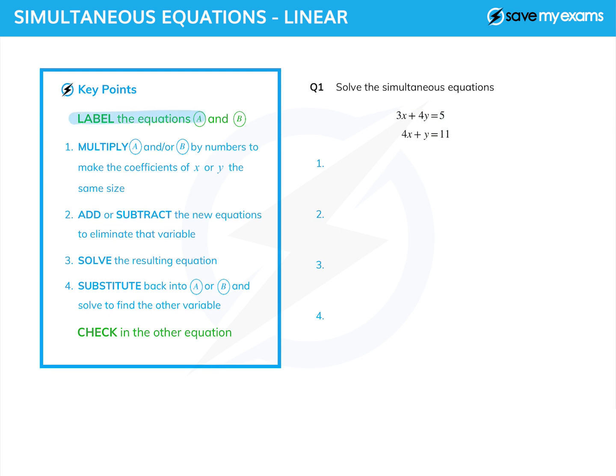Well, always a good idea in simultaneous equations to label your equations. A and B, I'm going to call them. And then what we're going to do is we're going to use something called the elimination method, or the balance method, which is where we make the coefficients of either x or y the same size in my equations. Okay, because at the moment they're different. But if you look at these equations, I could very easily multiply the second one by 4, and then I'd have 4y in each of them.